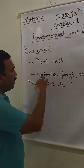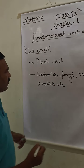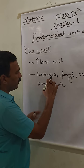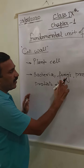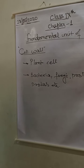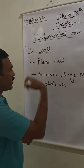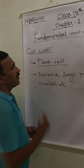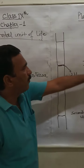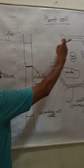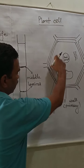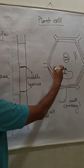Besides plant cells, some of these organisms — bacteria, fungi, protozoa, and protists — also have a cell wall. We will now start our discussion with the plant cell. Here you can see a typical structure of a plant cell, which I will discuss later on.